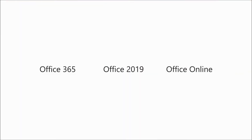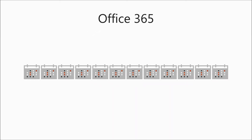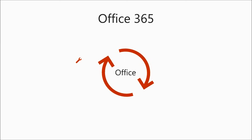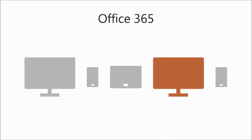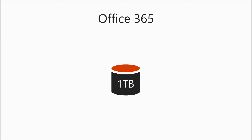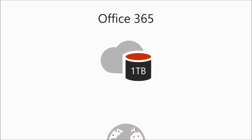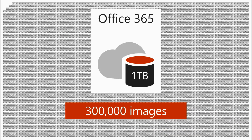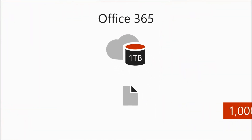What's the difference between Office 365, Office 2019, and Office Online? Office 365 is a subscription plan. For a low monthly or yearly cost, you get the latest version of Office, always up to date with the newest features and security. You can install Office on all your devices and be signed in to five at a time. With your subscription, you get a terabyte of OneDrive cloud storage — that's about 300,000 images or a million documents.